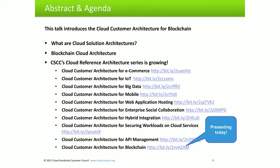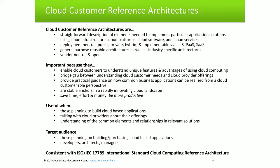We've been working on a series of cloud reference architectures that describe how to implement particular application solutions using cloud infrastructure — covering things like e-commerce, mobile applications, IoT, big data, and API management. The cloud reference architectures published by the Cloud Council are deployment-neutral, straightforward descriptions of elements needed to implement particular solutions using cloud infrastructure, platforms, cloud software, and services. You can use public, private, or hybrid cloud environments, and they're designed to be implementable using IaaS, PaaS, or SaaS.